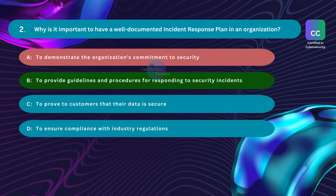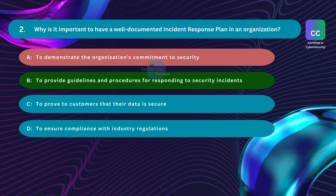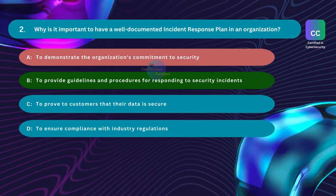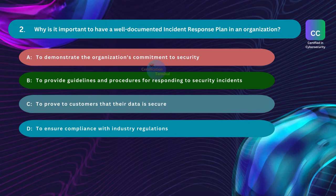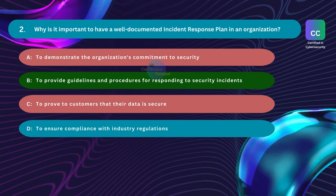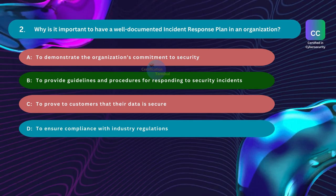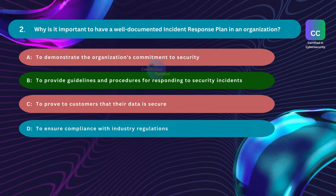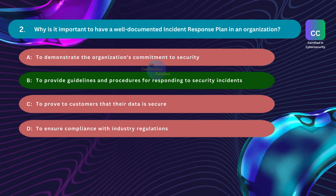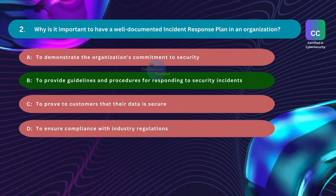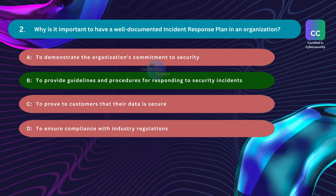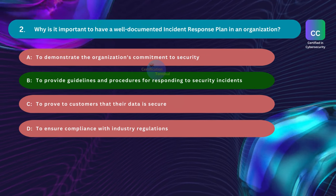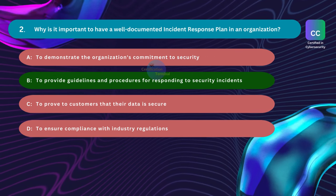Option A is incorrect — while having an incident response plan demonstrates commitment to security, the primary purpose is to provide actionable guidance for responding to incidents; it is a practical tool rather than a symbolic gesture. Option C is incorrect — a well-implemented plan contributes to overall security but its primary focus is incident response, not proving security to customers. Option D is incorrect — while compliance is often a requirement, the primary purpose is not just to check a regulatory box; compliance is a byproduct of a robust security framework.